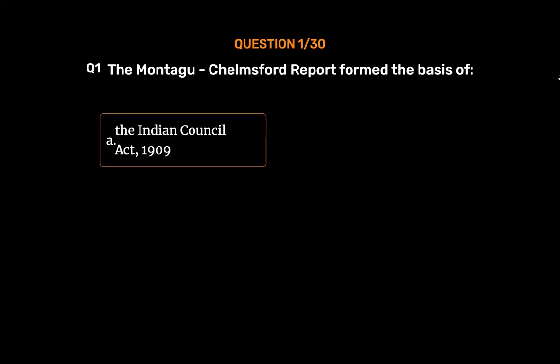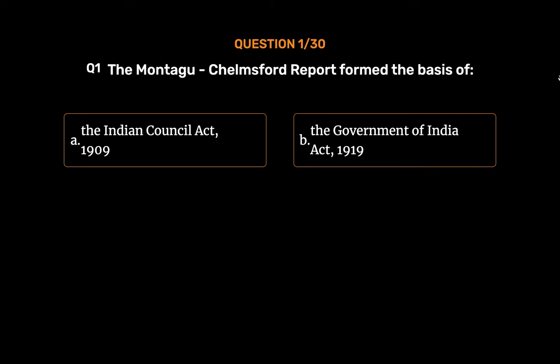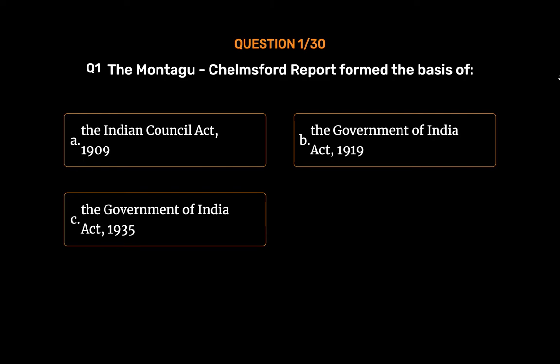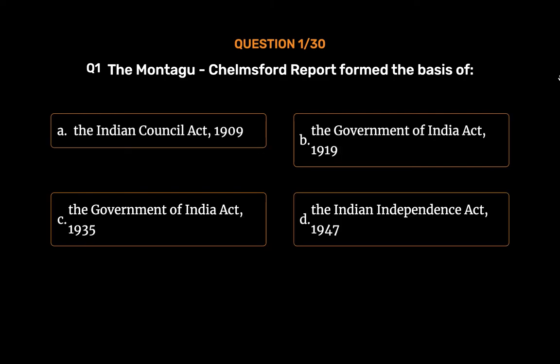Question No. 1. The Montague-Chelmsford Report formed the basis of: Option A, the Indian Council Act, 1909; Option B, the Government of India Act, 1919; Option C, the Government of India Act, 1935; Option D, the Indian Independence Act, 1947. The correct answer is Option B, the Government of India Act, 1919.